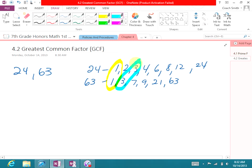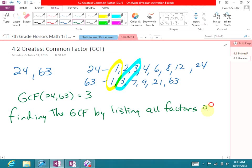We're not looking at 1 because it's not the greatest common factor. The next common factor is 3, and obviously, that's the biggest one we have. So, the GCF, the greatest common factor of 24 and 63 equals 3. That is what we call finding the GCF by listing all factors of each number.